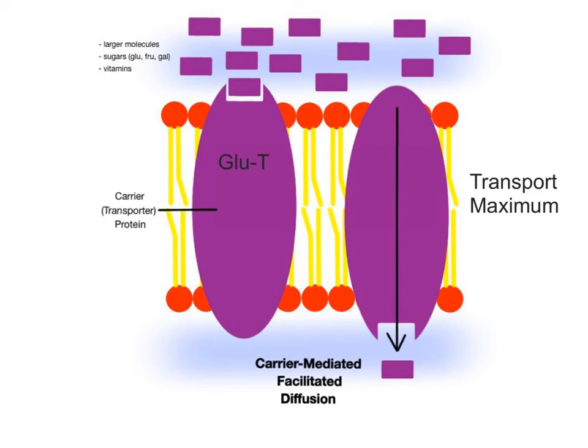This is where the hormone insulin plays a big role in the body. Insulin works by inserting many copies of GLUT proteins into cell membranes to accelerate glucose imports into body cells. So, through insulin's actions, the transport maximum of glucose is greatly increased, and more glucose can be imported into cells from the blood at a much faster rate.